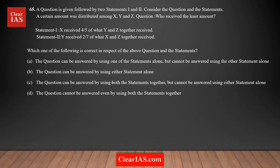Let's do question number 65. A certain amount was distributed among X, Y, and Z, three people. The question is: who received the least amount? You need to find out which person received the smallest amount, followed by two statements.